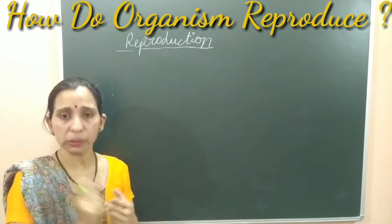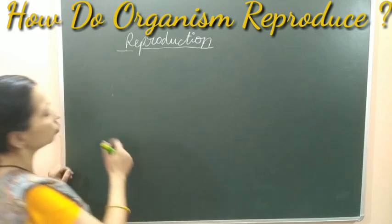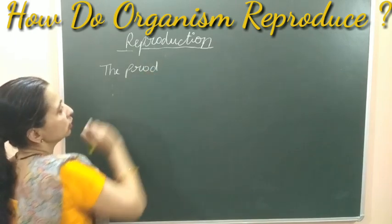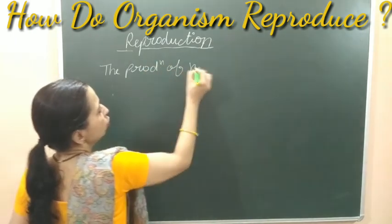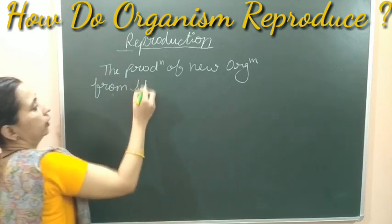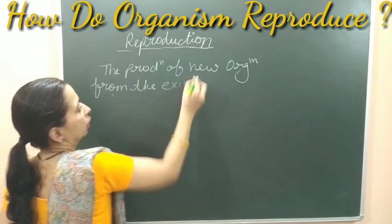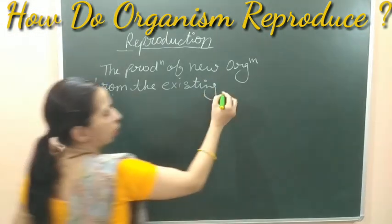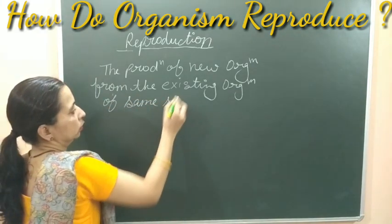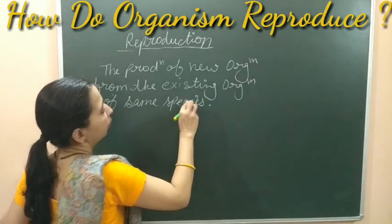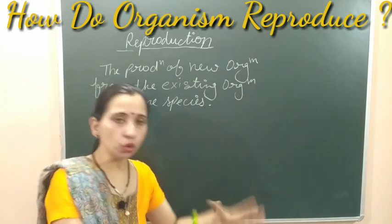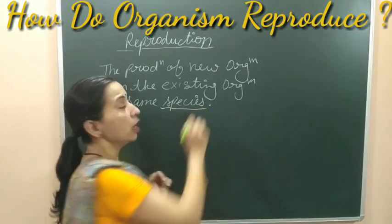Let's write the proper definition of reproduction: it is the production of new organisms from the existing organisms of the same species. This is the proper definition of reproduction. You can understand that this is the process in which any living organism gives birth to new organisms, but it should be of the same species.